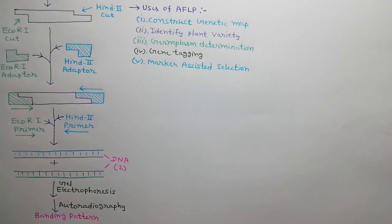AFLP is used to construct genetic map, to identify plant variety, to determine germplasm, for gene tagging and in marker assisted selection.